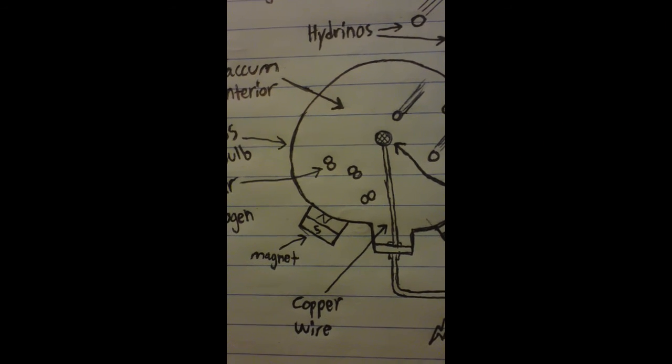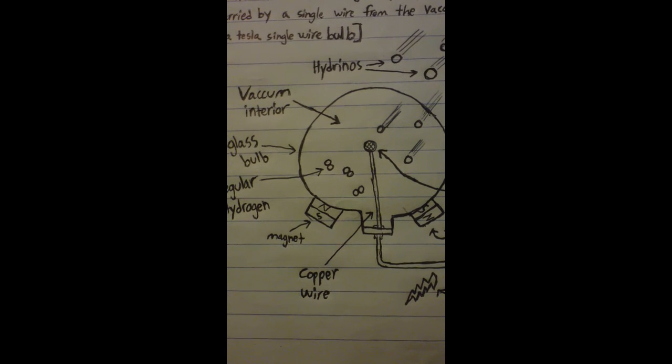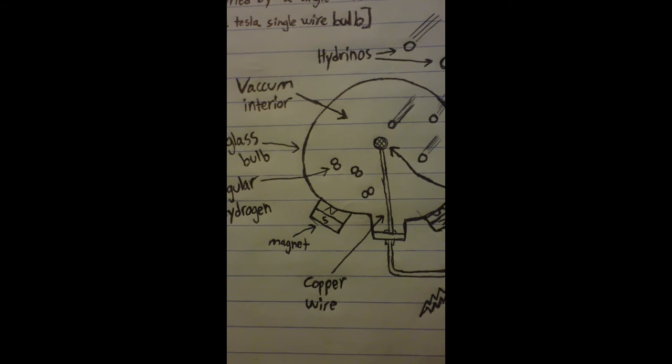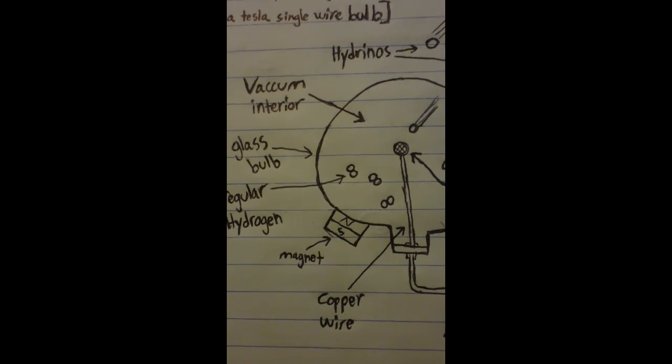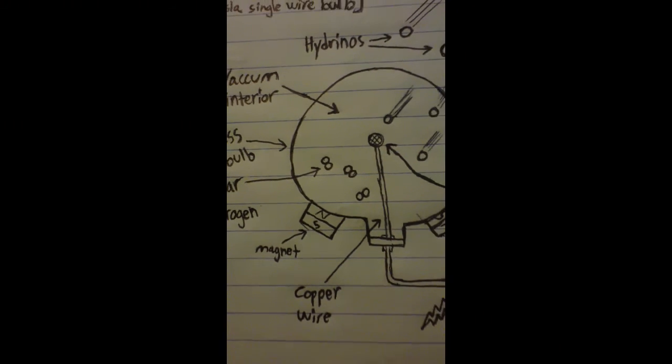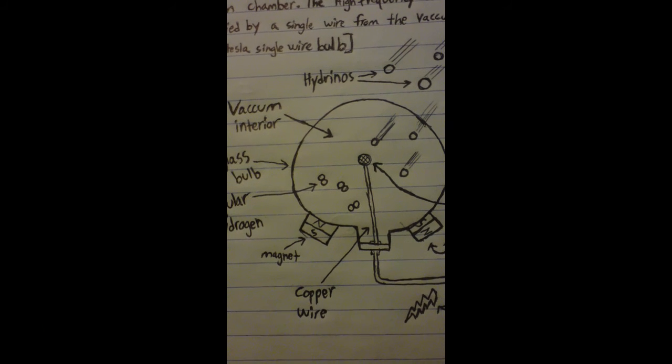This vacuum vessel with the magnetic fields will slow the hydrinos, and the hydrinos will then form regular hydrogen, which goes into hydrogen's normal diatomic state of two atoms per molecule.